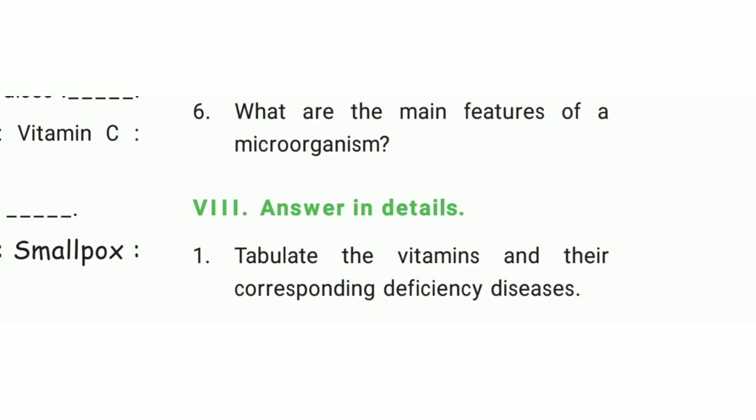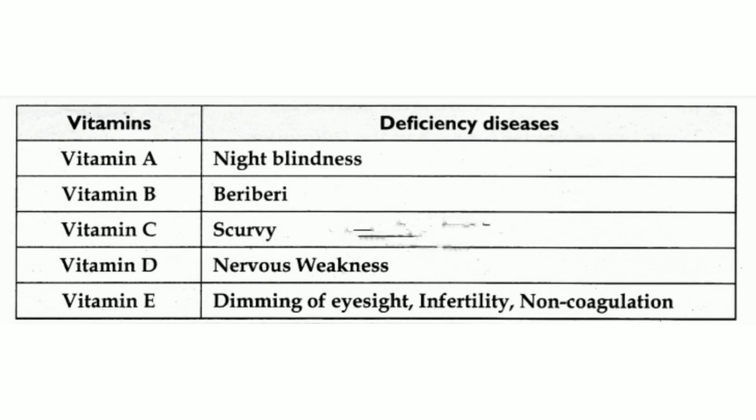Answer in detail. First one: tabulate the vitamins and their corresponding deficiency diseases. Vitamin A — night blindness; vitamin B — beriberi. Take note and write the remaining answers from your book. All the book back answers for this lesson are covered in this video. This video is useful for you.